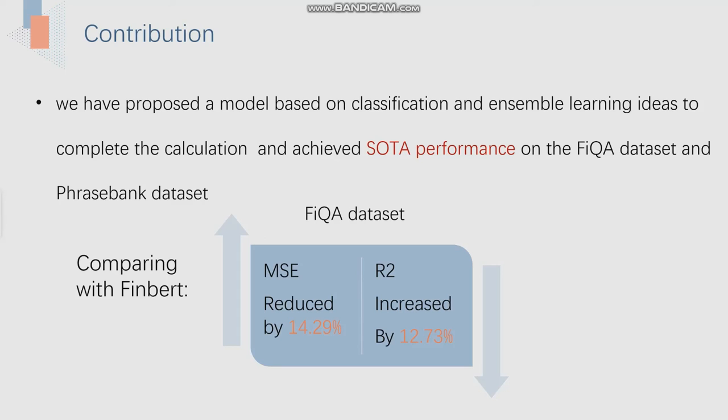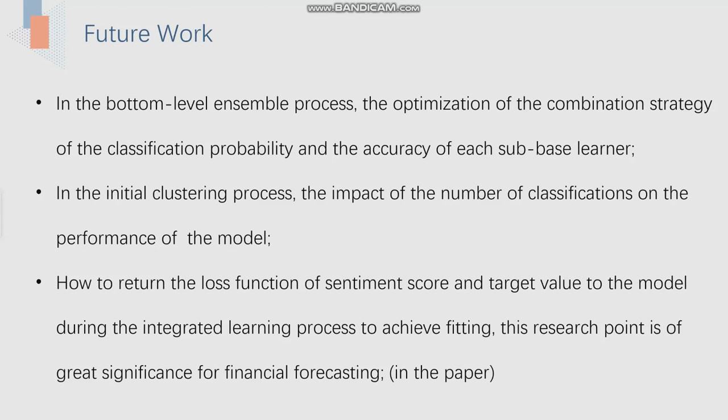The future work is that in the bottom-level ensemble processing, we need to consider the optimization of the combination strategy of the classification probability and the accuracy of each sub-base learner.